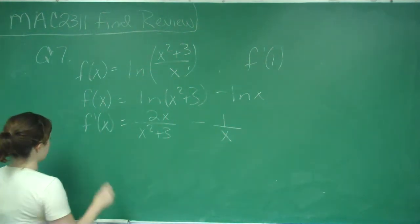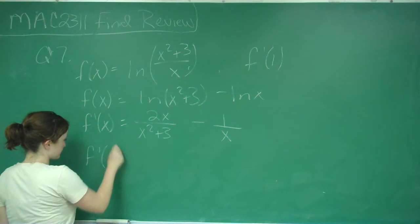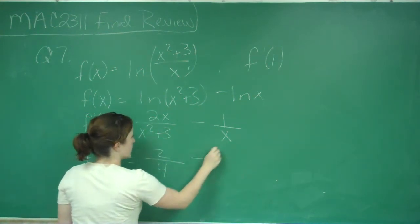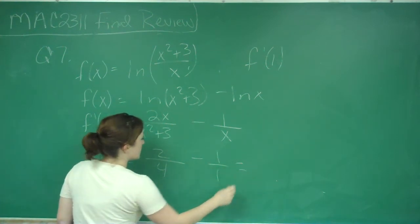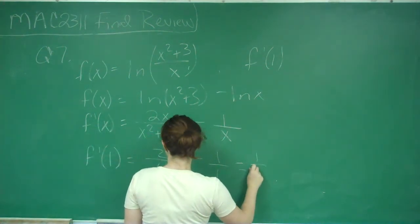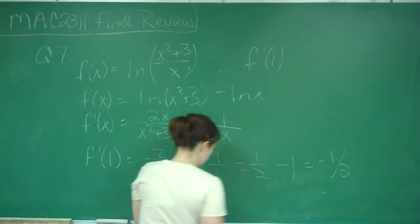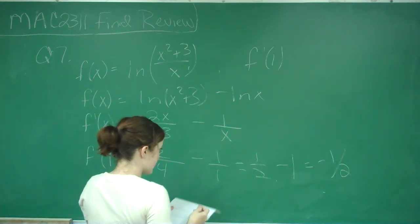So if I'm just looking now for f'(1), I get 2 over (1 plus 3 is 4) minus 1 over 1. So that gives me 1/2 minus 1, which is going to be 1/2, and that is answer A.